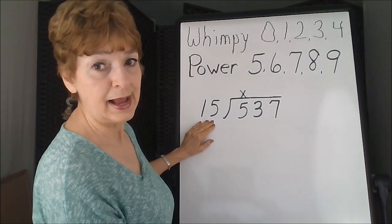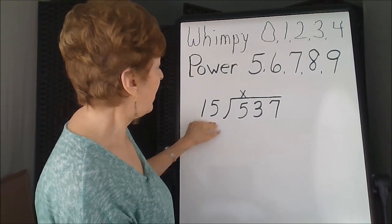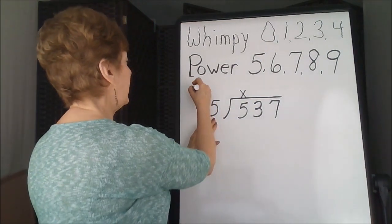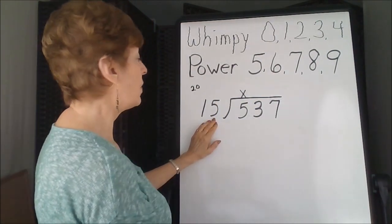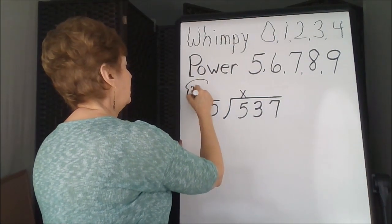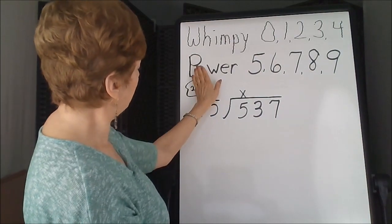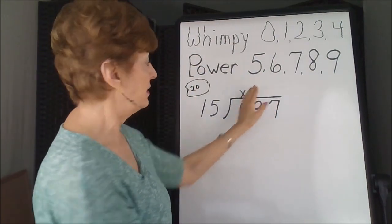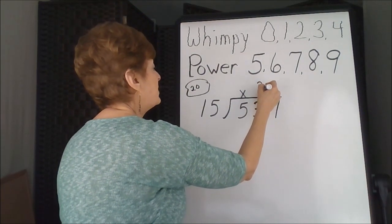15, we're going to estimate around 5 is a power number, so this bumps it up to 20. 15 is closer to 20 than it is to 10. 2 goes into 5 two times, so we'll use this.